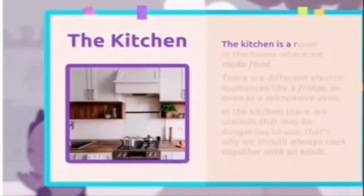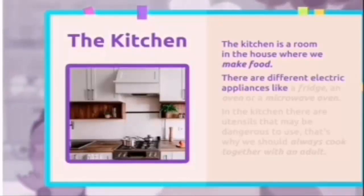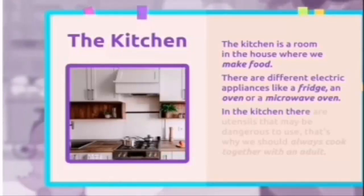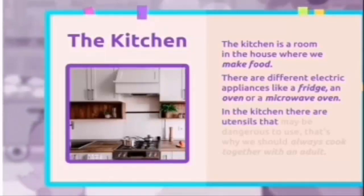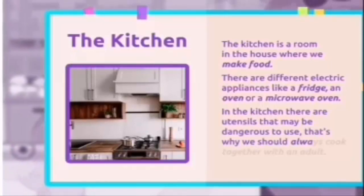The kitchen is a room in the house where we make food. There are different electric appliances like a fridge, an oven, or a microwave oven. In the kitchen there are utensils that may be dangerous to use — that's why we should always cook together with an adult.